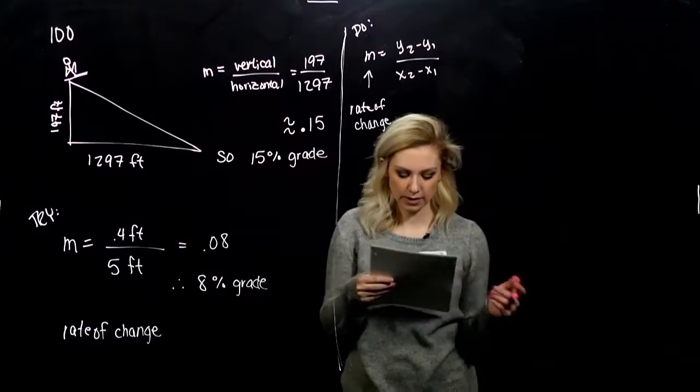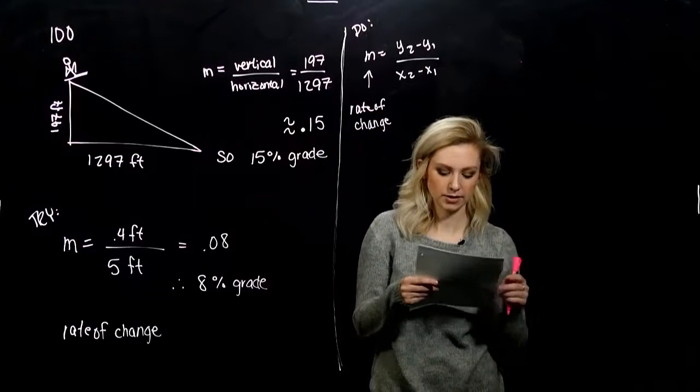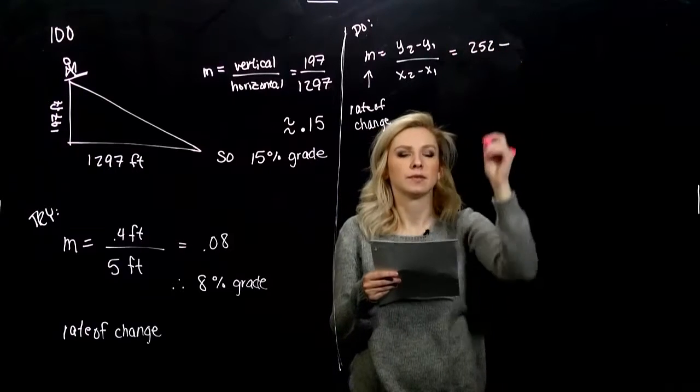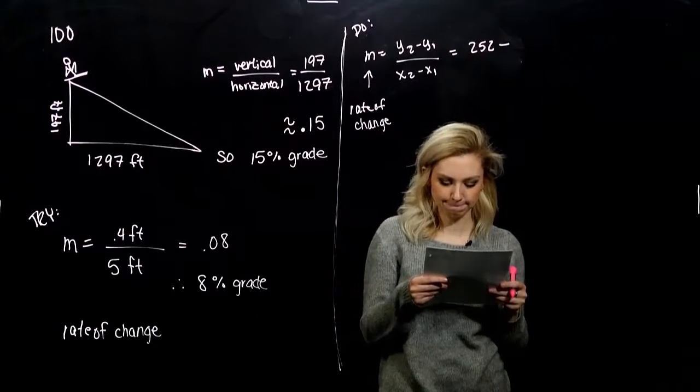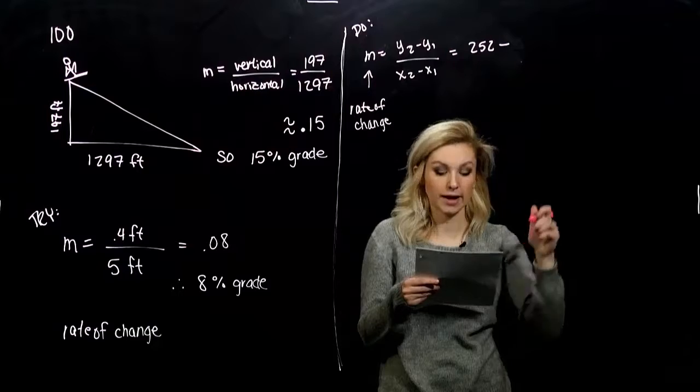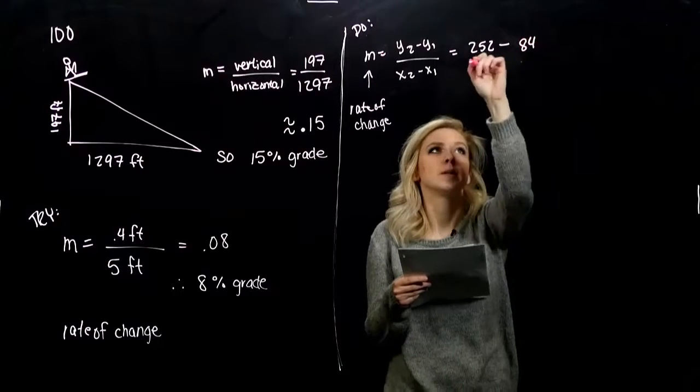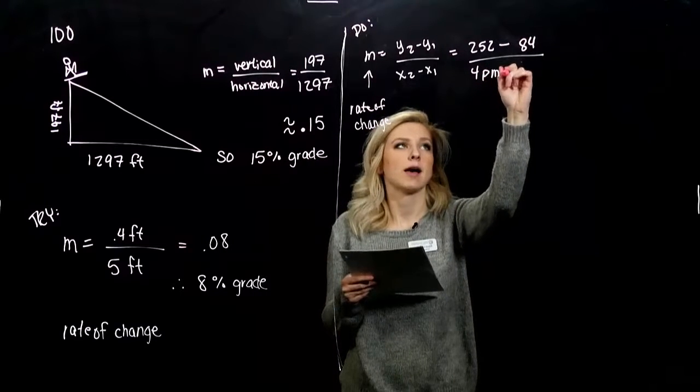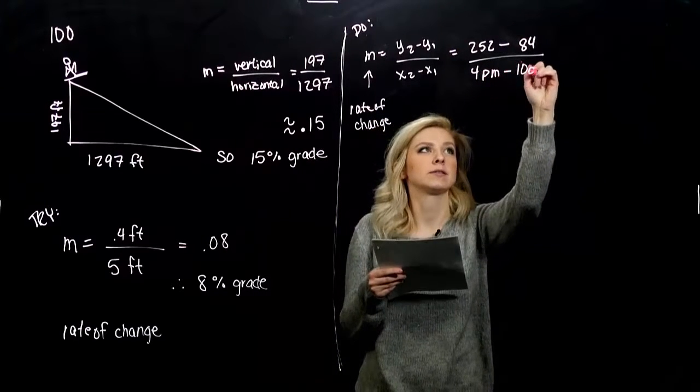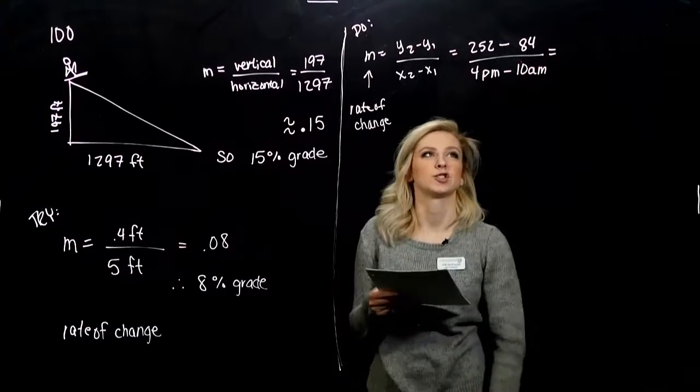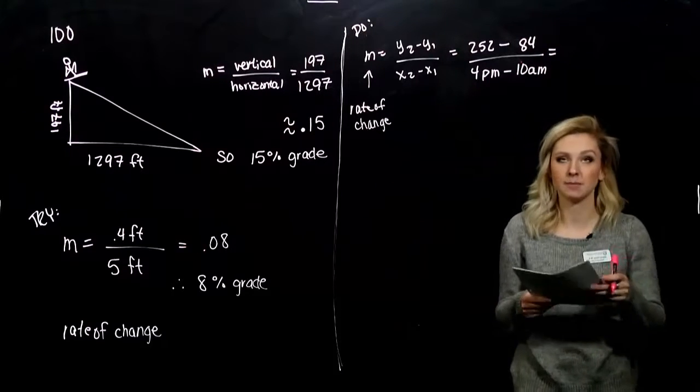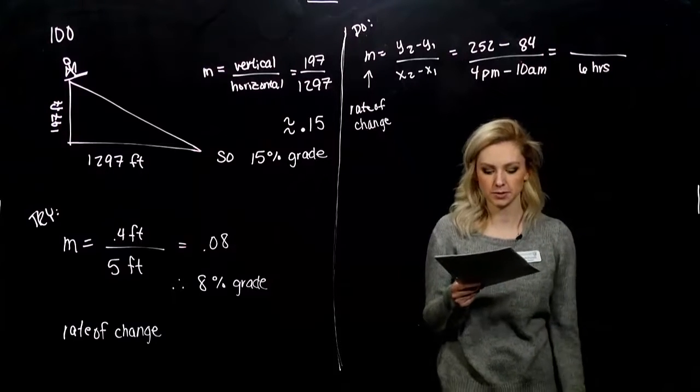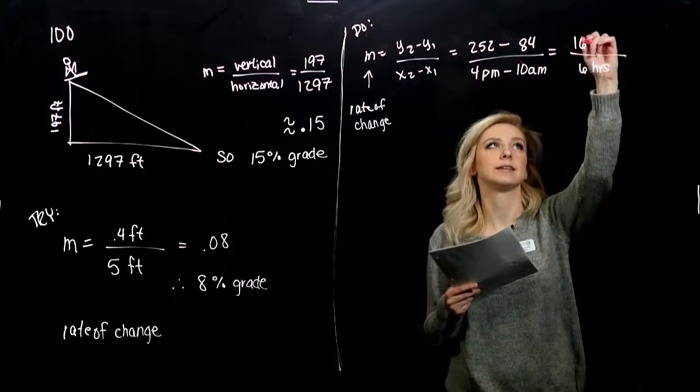So later in the day, specifically 4 p.m., how many cars did we produce? 252. And earlier in the day, 10 a.m., how many did they make? They had 84 cars pumping out. So the difference between the times is the time that's passed. So from 10 a.m. to 4 p.m., 6 hours had passed. And the difference between the number of cars was 168.